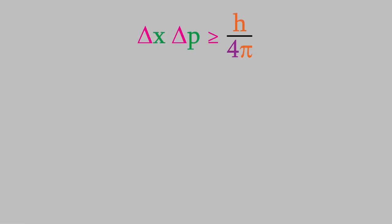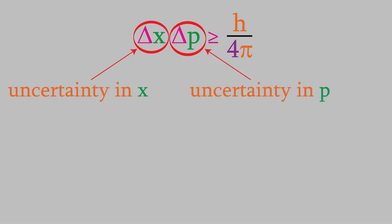We can write that this way. Here, delta x is the uncertainty in the position of the particle, and delta p is the uncertainty in the particle's momentum. This equation tells us that the product of the two uncertainties must be greater than or equal to h, which is Planck's constant, over 4 times pi.